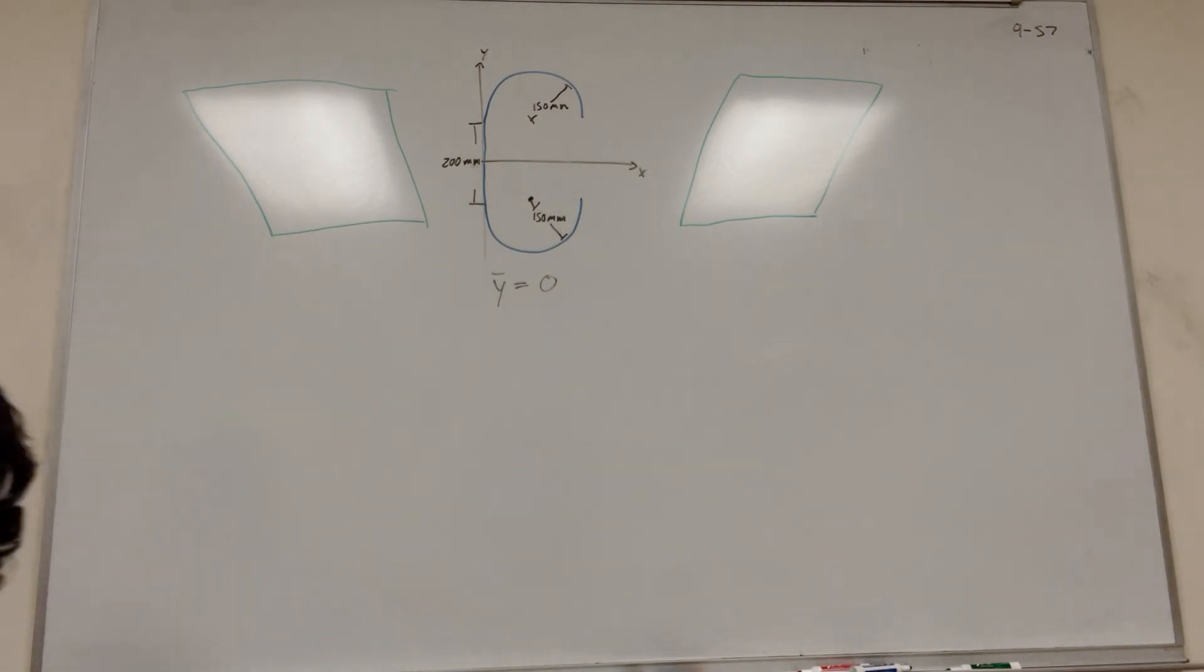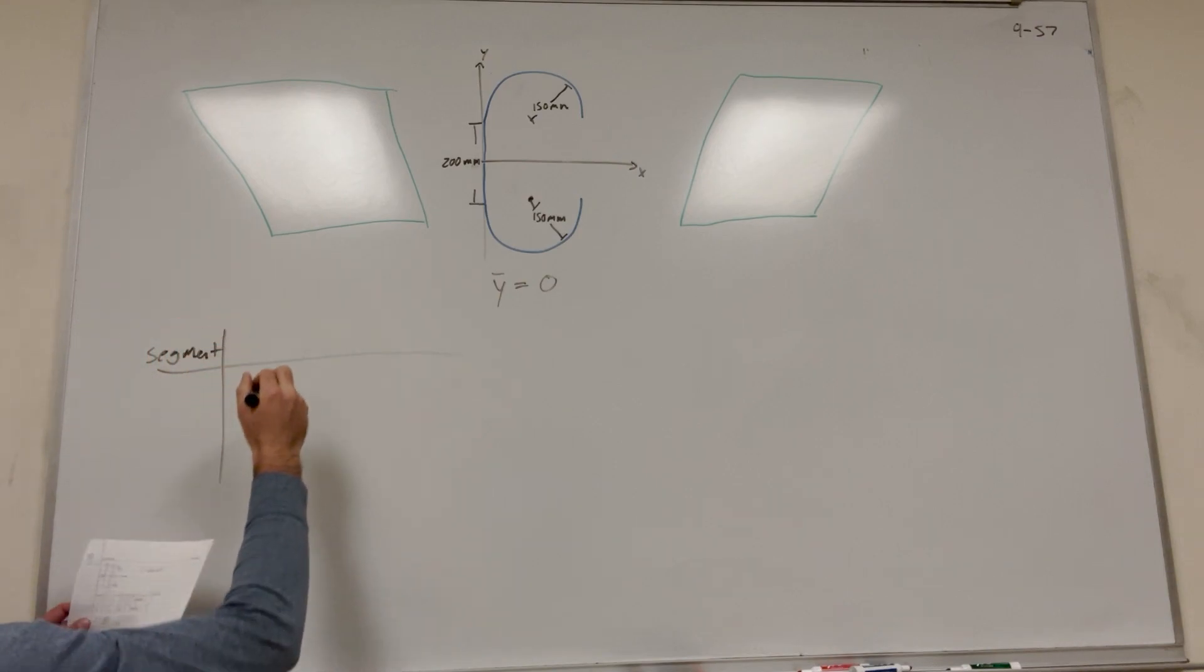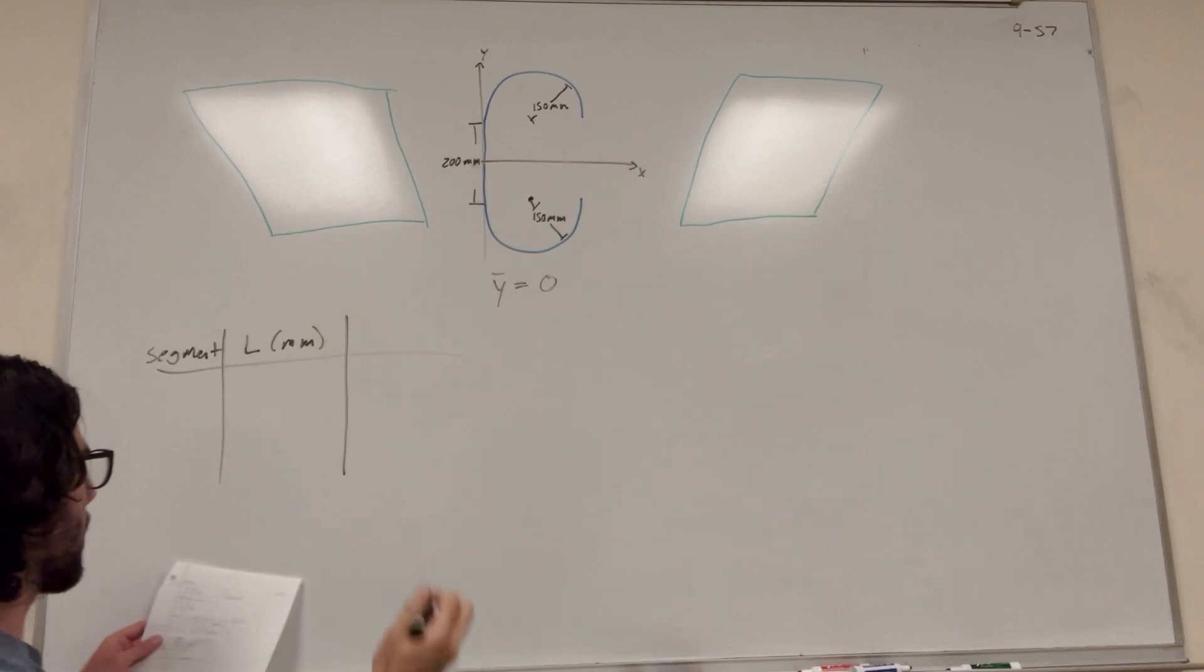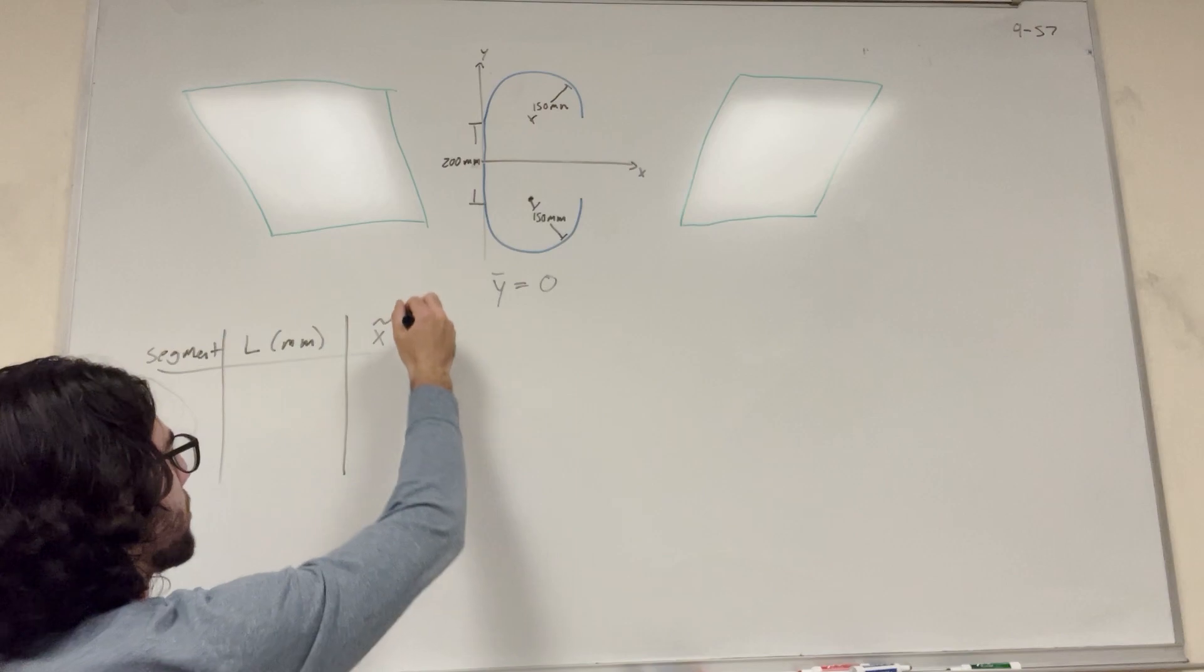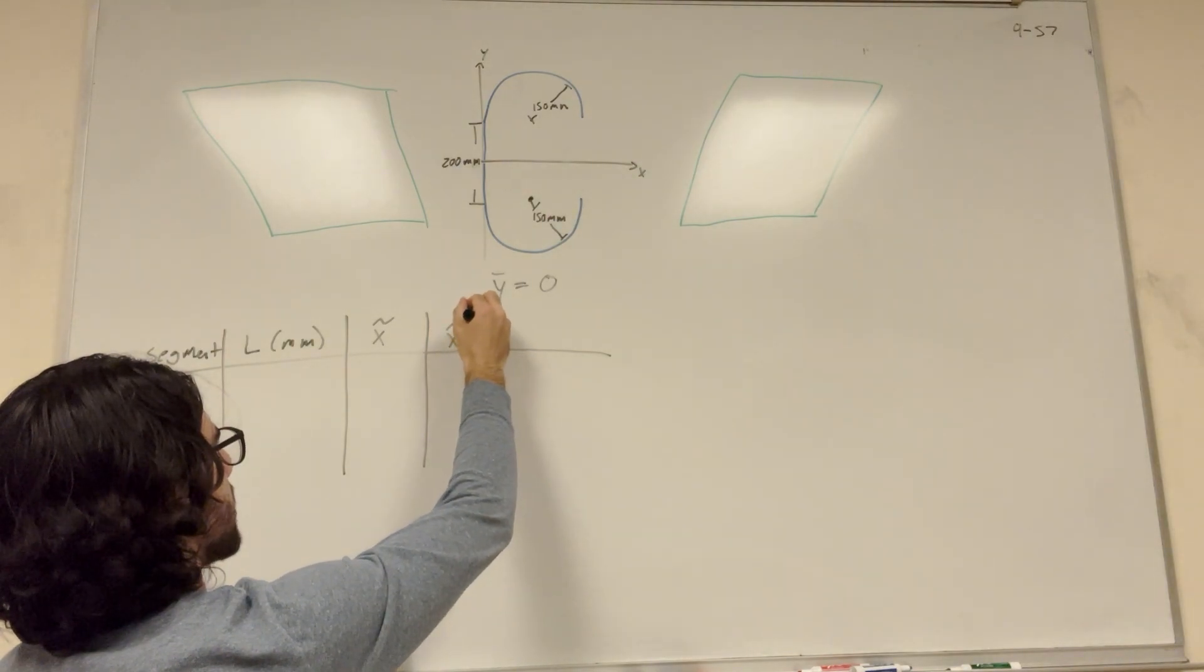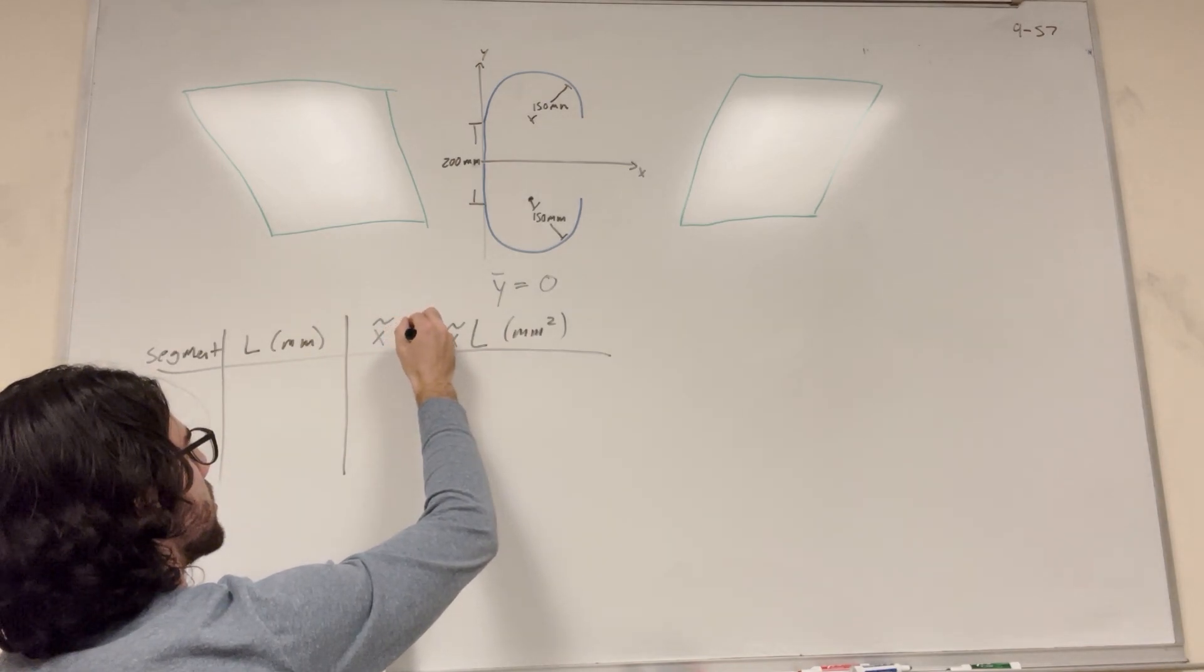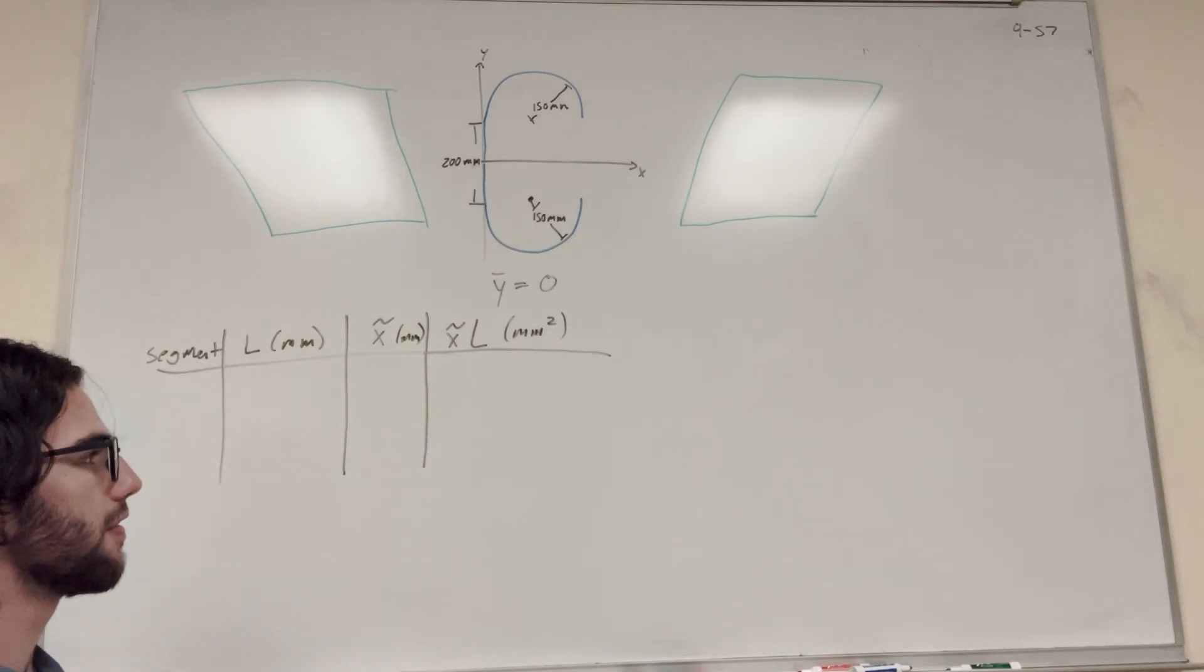What's our table going to look like? The table is going to be different depending on the problem, but for this one, because we have a line segment, we're going to have segment. We're going to have the length in millimeters. You can convert to meters first if you'd like to. Then we're going to have x tilde, which is the center of mass of the segment. And then we're also going to have x tilde times L, and this will be in millimeters squared. This will make more sense why you need this later.